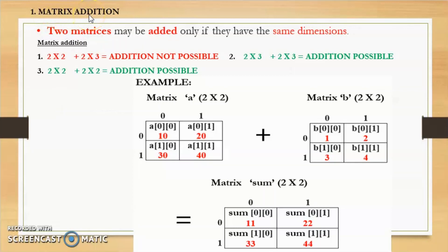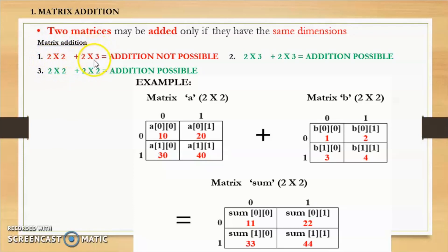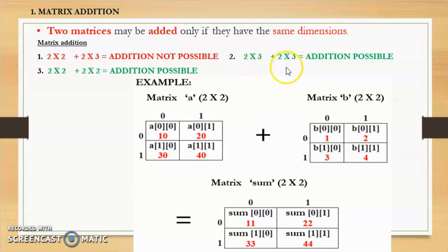Before I explain the code, I will explain the logic with the help of an example. We can add two matrices only if they have the same dimensions — that is, the number of rows and columns of the first matrix must equal those of the second matrix. For example, a 2x2 matrix cannot be added with a 2x3 matrix because the number of columns are different. But a 2x3 matrix can be added with another 2x3 matrix because the dimensions are the same.